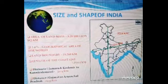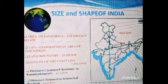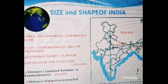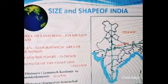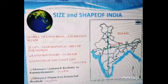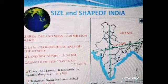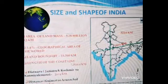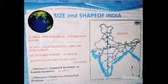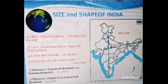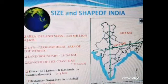Good morning children. Today in geography chapter 1, India location and size, we will discuss four topics: one is size, second location, third India and the world, fourth India's neighbors. And the first one is the area and size of India.